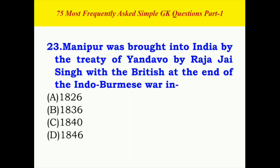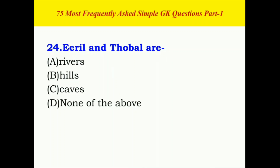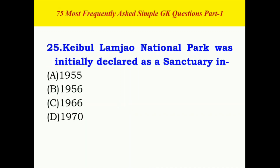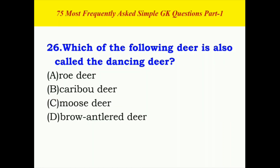Manipur was brought into India by the Treaty of Yandabo by Raja Jai Singh with the British at the end of the Indo-Burmese War — the correct answer is A. Iril and Thoubal rivers — the correct answer is A. Keibul Lamjao National Park was initially declared as a sanctuary — the correct answer is C. Which of the following deer is also called the dancing deer?